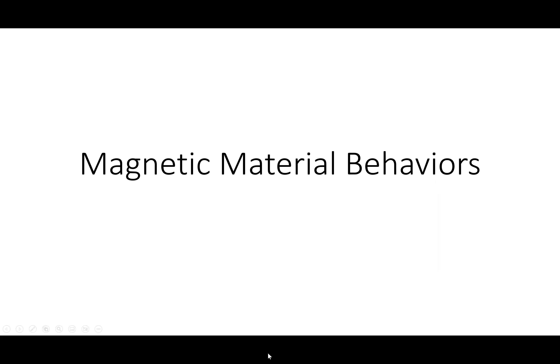First, I want to talk about magnetic materials. Magnetic materials are weird in that, unlike a capacitor which tends to be linear, these tend to be a little bit more non-linear. When I say non-linear, what that means is the relationship B equals mu times H works over a range but kind of breaks down, and there are all kinds of implications from that.